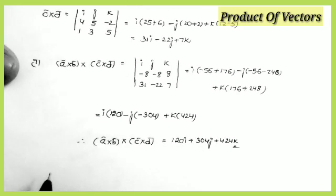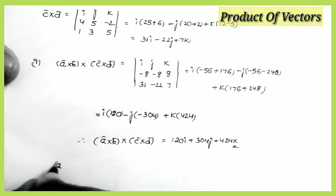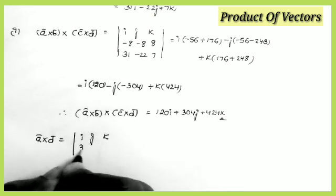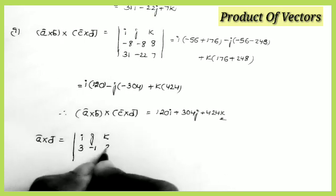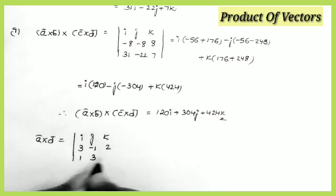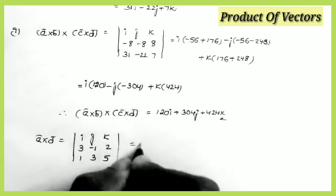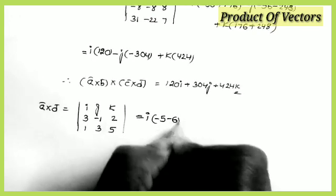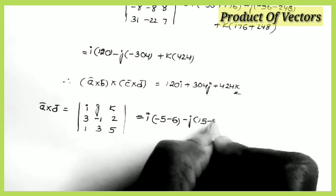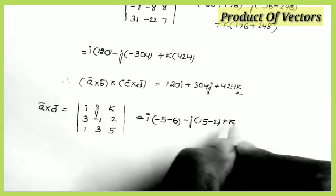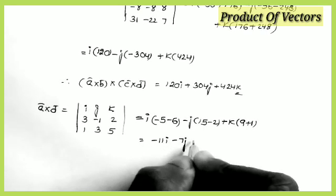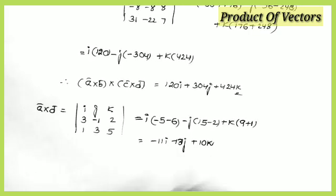For the second part: (a×b)·c − (a×d)·b. First finding a×d with a = (3, −1, 2) and d = (1, 3, 5): i(−5 − 6) = −11; −j(15 − 2) = −13; k(9 − (−1)) = 10. Therefore a×d = −11i − 13j + 10k.